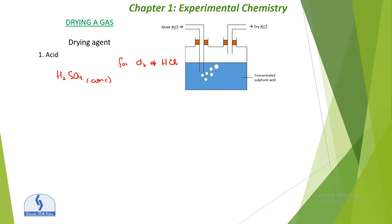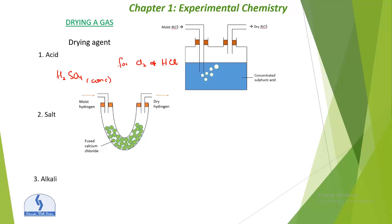The next drying agent is a salt: calcium chloride (CaCl₂). We use fused (anhydrous) calcium chloride because it removes all traces of water effectively.